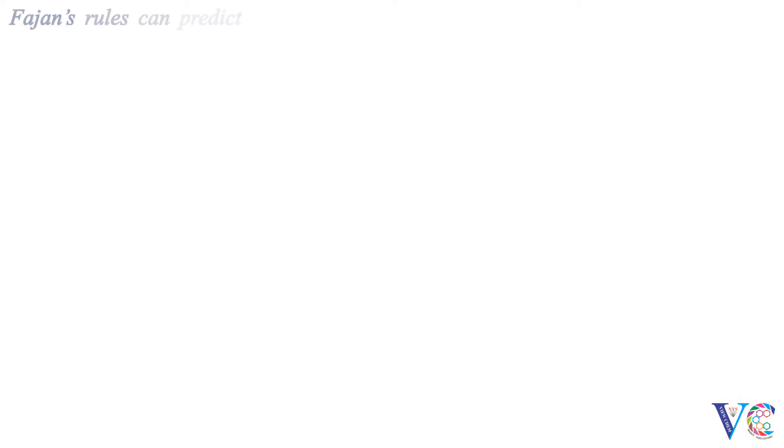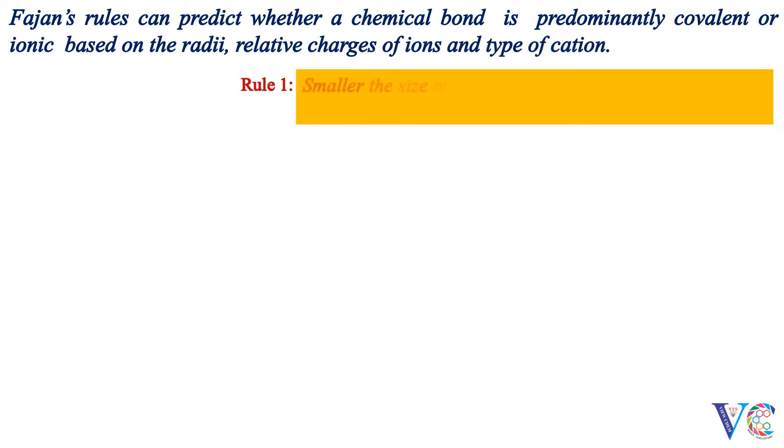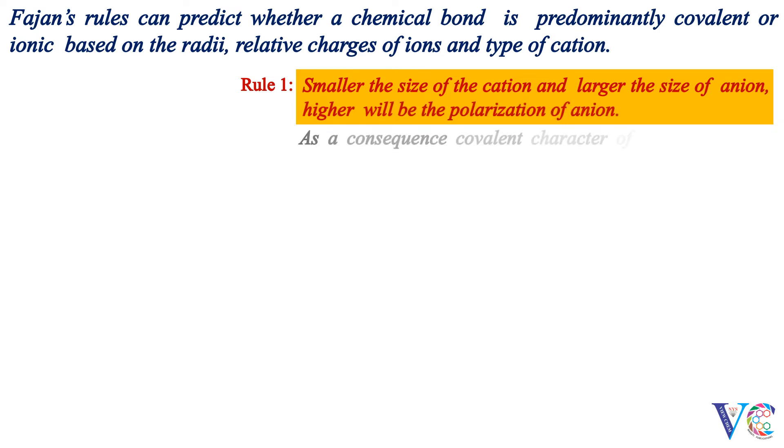Fajan's rules can predict whether a chemical bond is predominantly covalent or ionic based on the radii, relative charges of ions and type of cation. Fajan's rule 1: Smaller the size of cation and larger the size of anion, higher will be the polarization of anion. As a consequence, covalent character of that ionic bond increases.